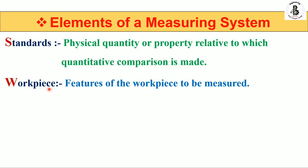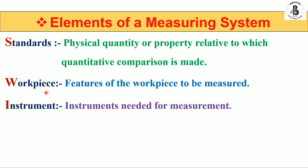So W stands for Work Piece. Then I — I stands for Instruments, or simply your measuring device. You can go for direct measurement with vernier calipers and micrometers, or you can also use indirect instruments like telescopic gauges and bore gauges. Whatever type of measurement — direct or indirect — the instrument plays a vital role and is a needed element for the measuring system.